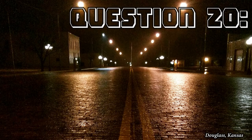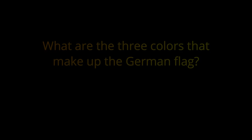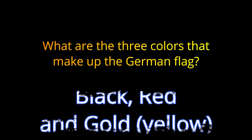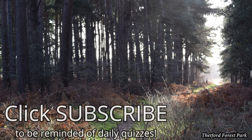Question 20. What are the three colors that make up the German flag? The answer is Black, Red, and Gold — or Yellow. Gold and Yellow are the same color.